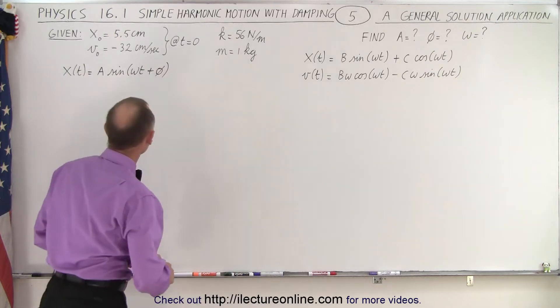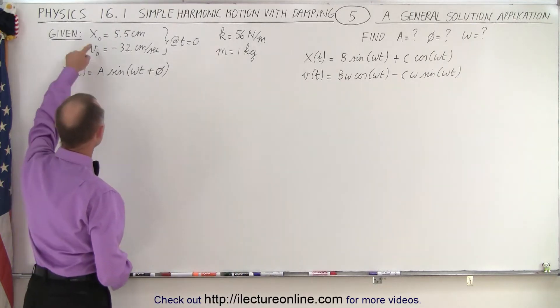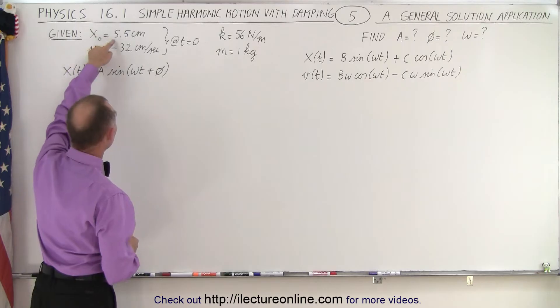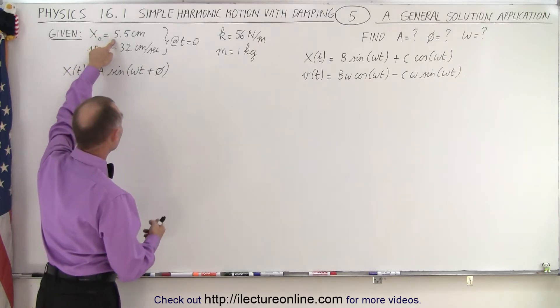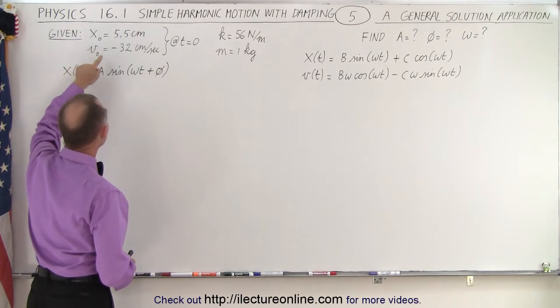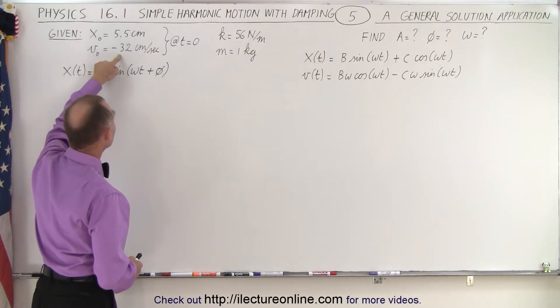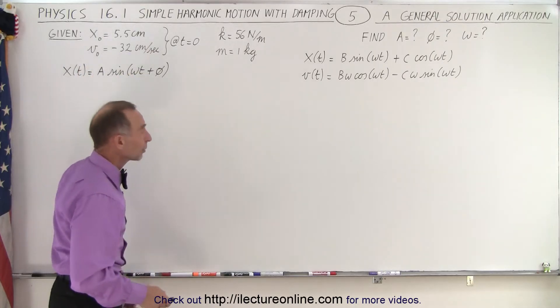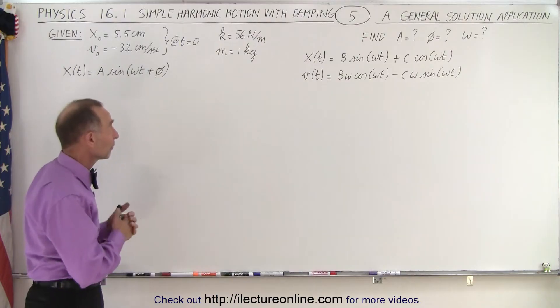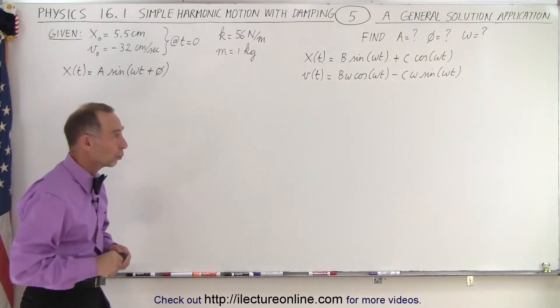We're given some initial conditions that x naught, the position, is 5.5 centimeters in the positive direction at t equals zero, and that the velocity is equal to negative 32 centimeters per second at time equals zero. The spring constant is 56 newtons per meter and the mass is one kilogram.